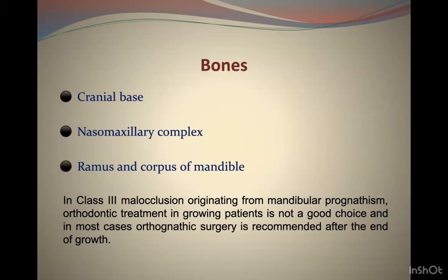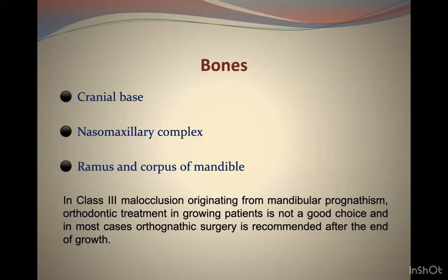The naso-maxillary complex is another contributor. If the maxilla becomes trapped in the mandible and cannot move downward and forward due to growth abnormalities or habits, it presents as maxillary deficiency — in length, vertical, and anterior-posterior dimensions. The ramus and corpus of the mandible also contribute: anteriorly positioned condyles and increased mandibular growth promote Class 3 malocclusion.